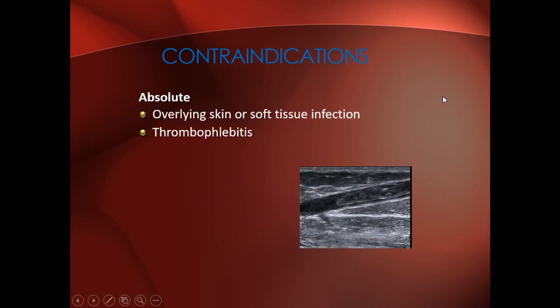What are the contraindications — conditions in which you cannot perform central venous access? The absolute contraindication is overlying skin or soft tissue infections. If there is an infection at the site chosen for insertion, we cannot proceed with catheterization because the infection can spread inside the body and affect other organs. Thrombophlebitis or thromboembolism, or any disease affecting coagulation, also make CVC placement contraindicated.